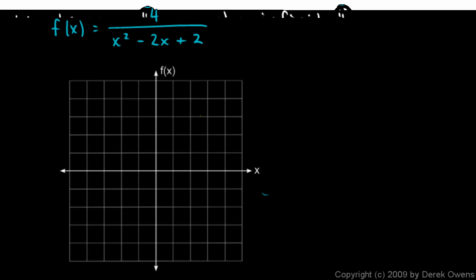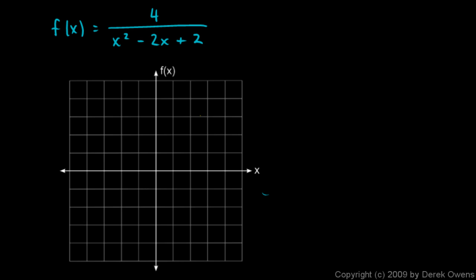Here's an example. f(x) is 4 over x squared minus 2x plus 2. If we graph this, it goes through the point (1, 4), and it goes through the points (0, 2) and (2, 2). There's a horizontal asymptote at y equals 0. We know that because we can look at the denominator and the numerator — think of each as a polynomial. The degree of the denominator is 2, which is greater than the degree of the numerator.